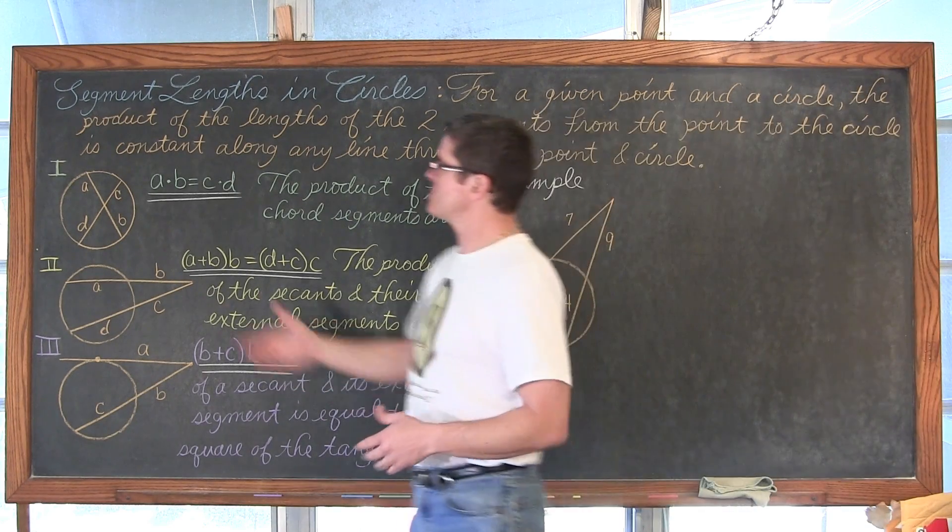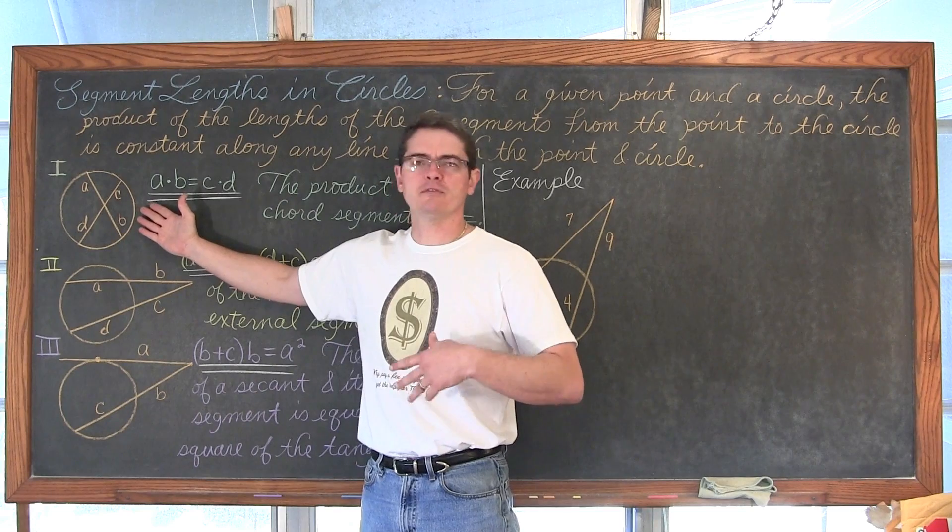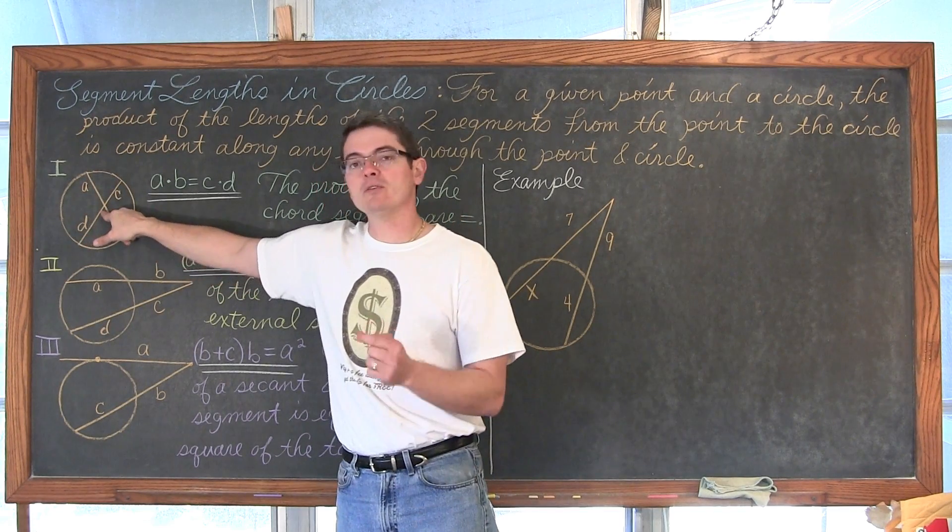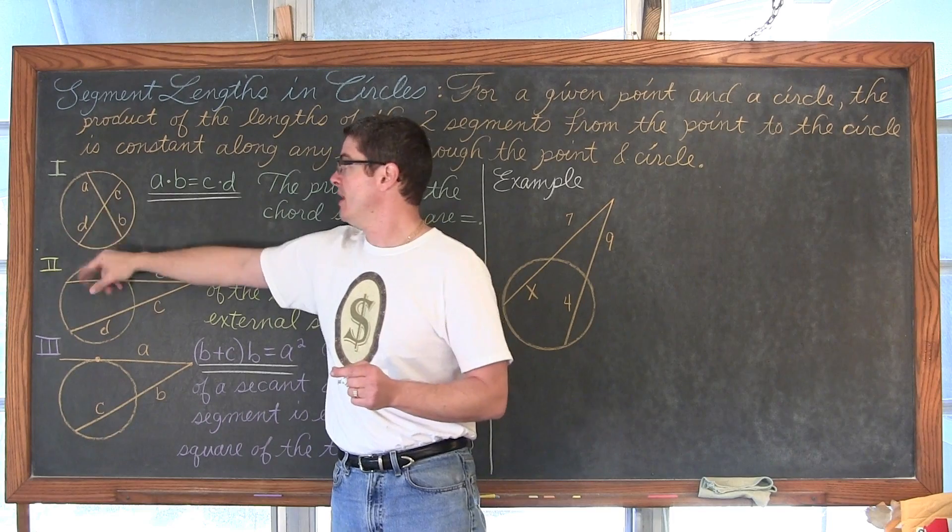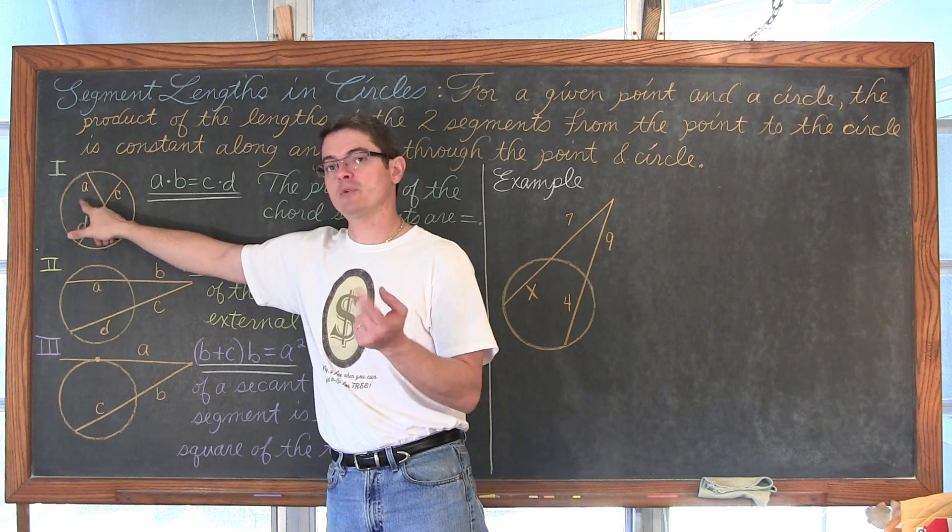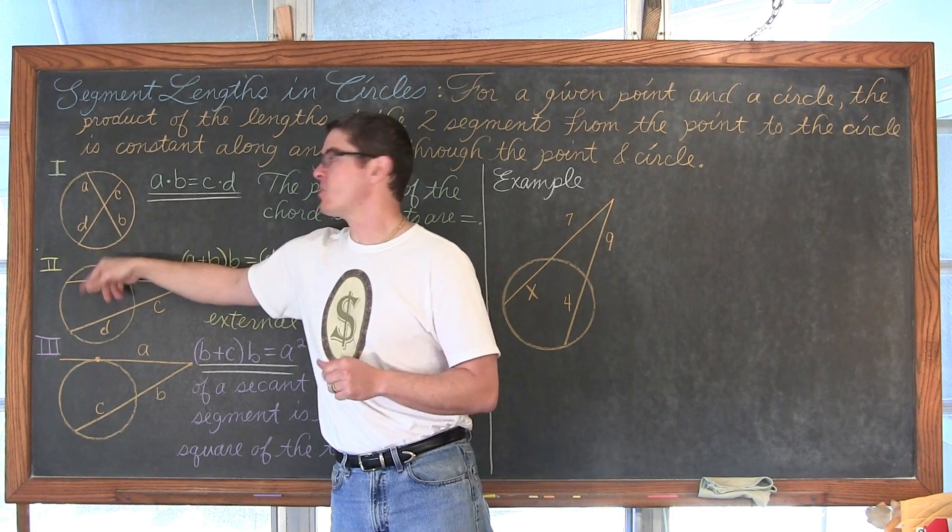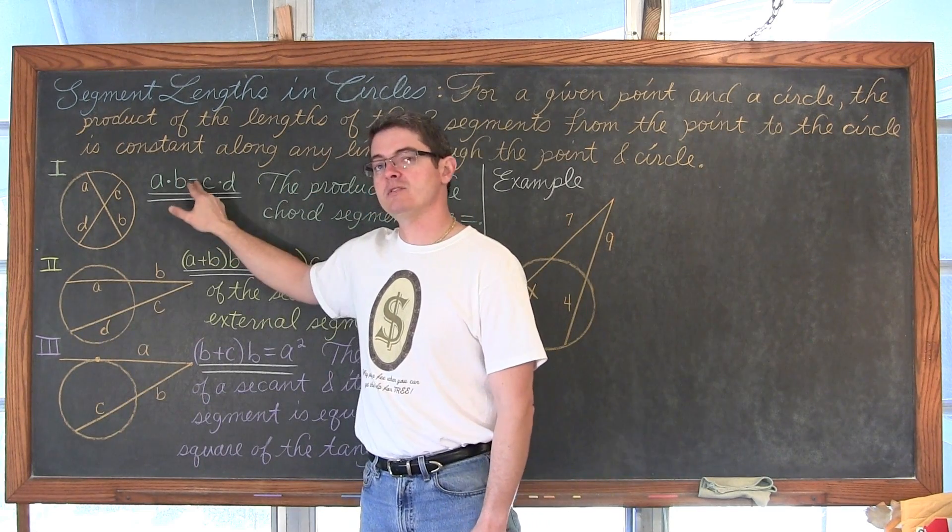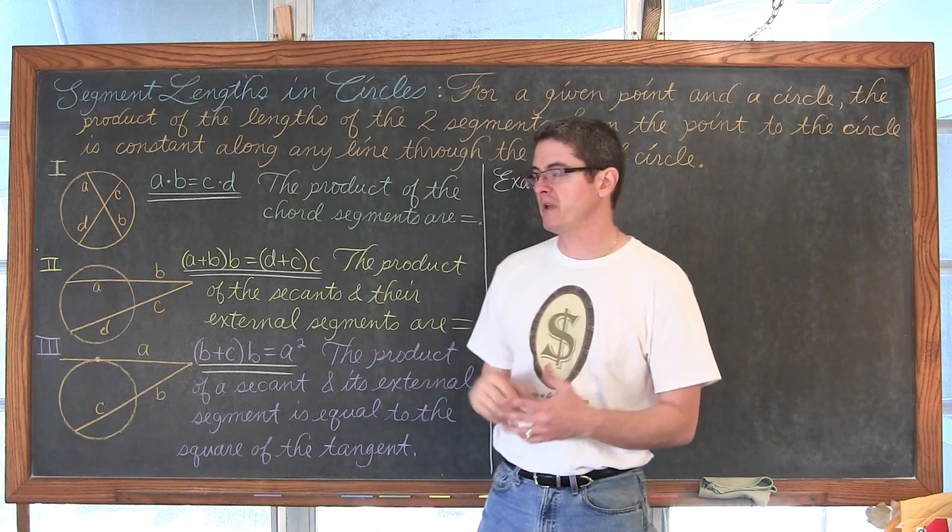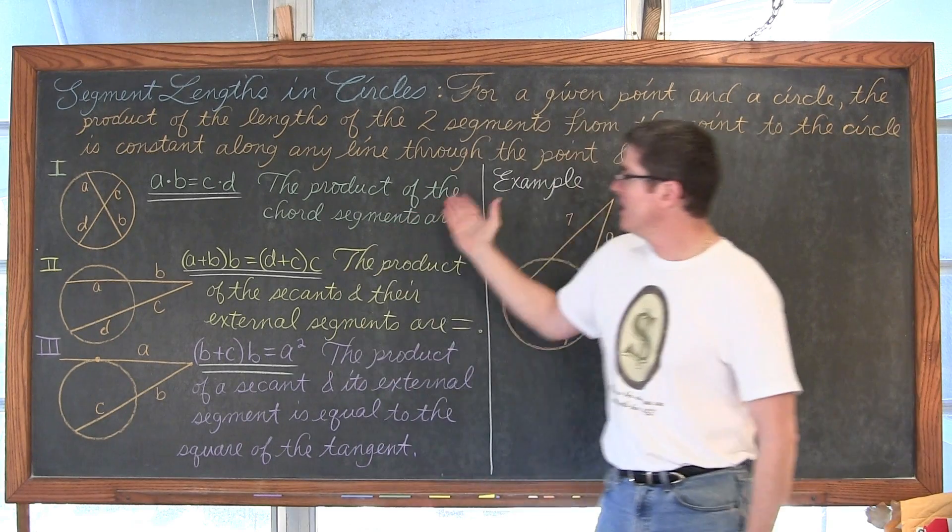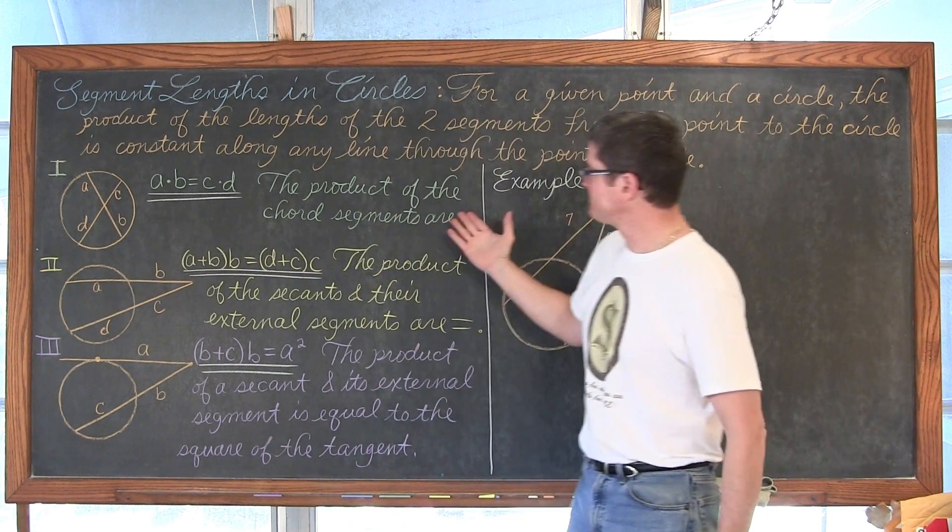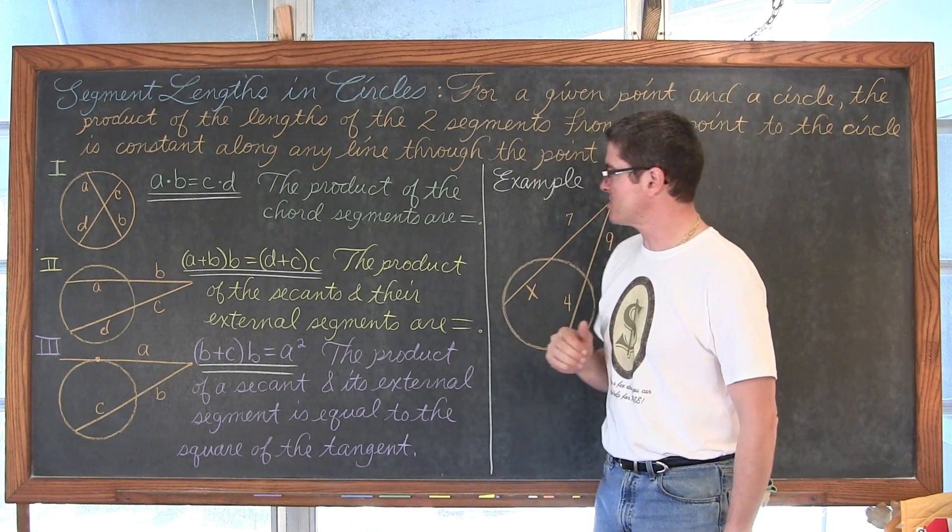Segment lengths in circles: for a given point in a circle, the product of the lengths of the two segments from the point to the circle is constant along any line through the point and the circle. So what we have here is our first condition: a circle and a couple of chords intersecting inside that circle. This chord is broken up into two segments A and B, and this chord into segments C and D. So the product of A and B is equal to the product of C and D. The product of the chord segments are equal.